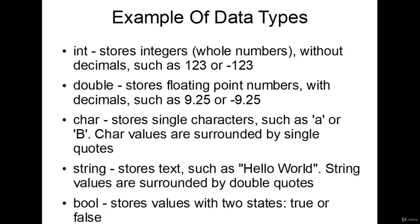Here are some examples of primitive data types. The int stores whole numbers — for example, 123 to negative 123. The double stores decimal floating point numbers. The char stores a single character. The string is text — we used it for our Hello World. And bool stores values that are in two states: either true or false. In the next video, we'll cover the exact ranges for these primitive data types.